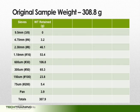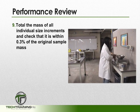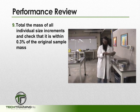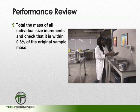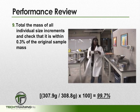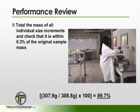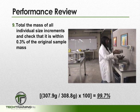One of the first things we want to do is total the mass of all individual size increments. When we make our total, we wind up with 307.9 grams of material after sieving. This is because step 9 requires us to total the mass of all individual increments and check that it is within 0.3% of the original sample mass. Here, we come up to 99.7% of the original sample, meaning that we have a valid test and can proceed with the rest of the calculations.